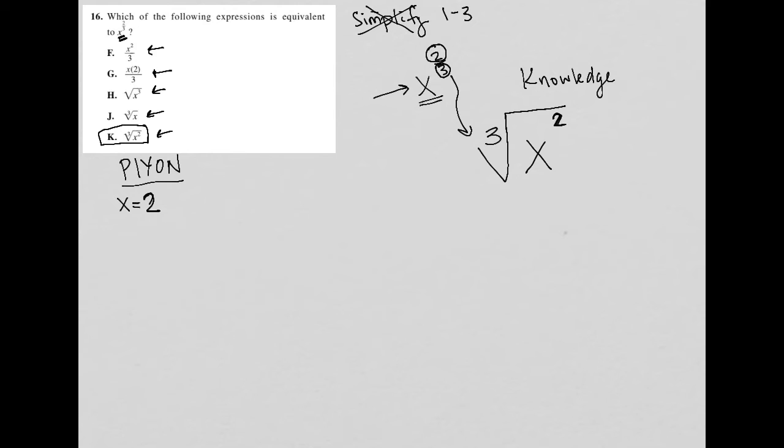I'm going to plug the number in that I chose into the original question. So this x to the two-thirds, I'm going to say that's going to be 2 to the two-thirds. And now I'm going to go to my calculator and figure out what is 2 to the two-thirds. So I have 2, and I want to raise that to a power of two-thirds. So 2 divided by 3, close, equals. And what I get from that is 1.587.